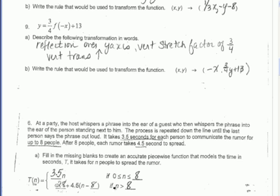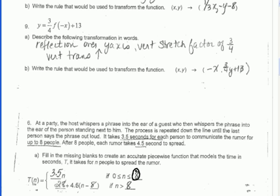Now for the second piece, before we can figure this out, we need to know at what point does the first piece end. So I'm just going to take this last n value, plug it in for n, so 3.5 times 8, and that's going to come out 28. So I know that after 8 people, it's been 28 seconds.